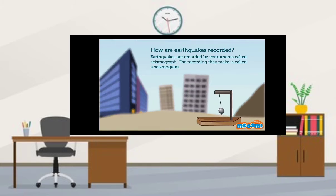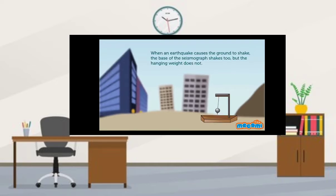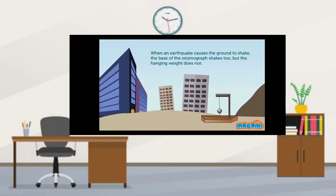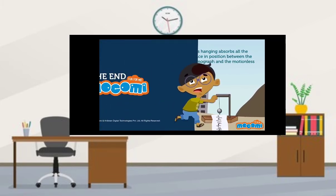Earthquakes are recorded by instruments called seismographs. The recording they make is called a seismogram. The seismograph has a base that sets firmly on the ground and a heavy weight that hangs free. When an earthquake causes the ground to shake, the base of the seismograph shakes too, but the hanging weight does not. Instead, the spring that is hanging absorbs all the movement. The difference in position between the shaking part of the seismograph and the motionless part is what is recorded.